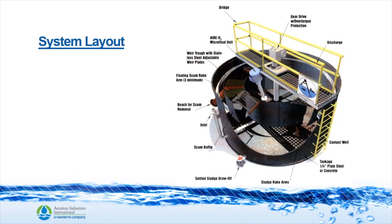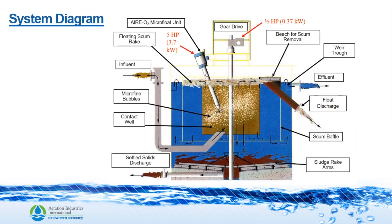Here is a 3D rendering of our DAF unit. This is a system diagram of our dispersed air flotation. On the left, you can see the influent comes in and enters into the contact zone where the microfloat unit adds micro-bubbles. Then we have a skimmer arm and a scum beach where we remove the floatables. On the bottom, we have a solid scraper to dispense of the heavier solids. And on the far right, you can see the clear effluent leaving the unit.